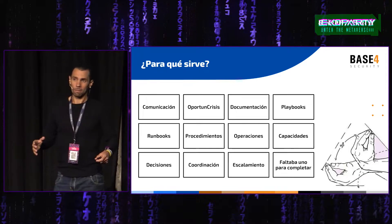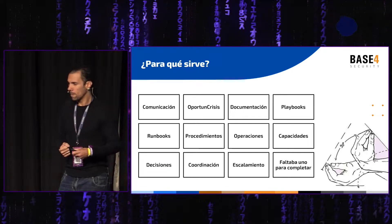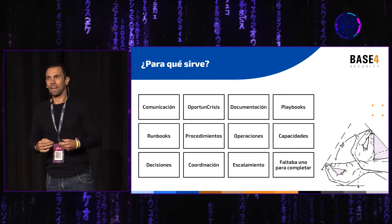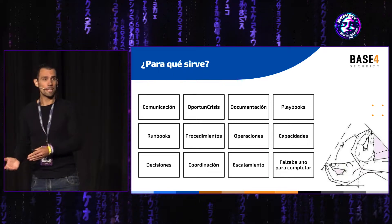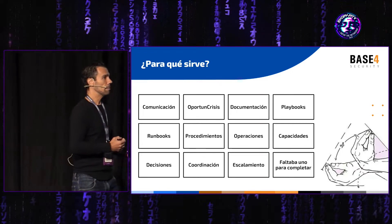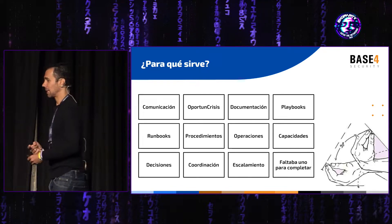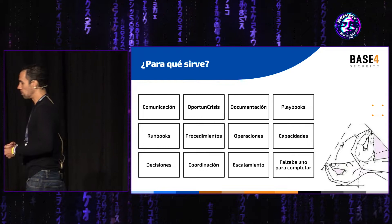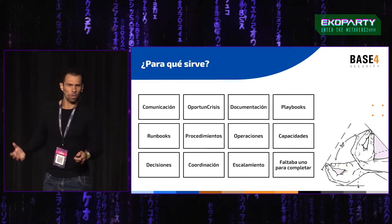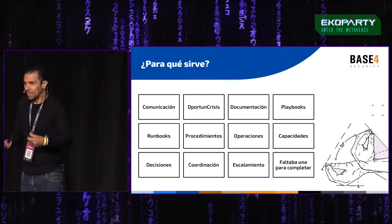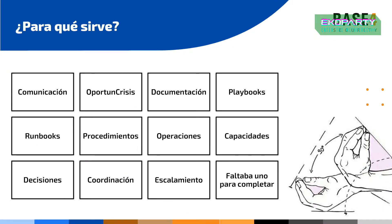¿Para qué sirve esto? Para un montón de cosas, tenemos que elegir para qué hacemos que sirva en nuestra organización. Principalmente para ver si todo lo que dijimos que íbamos a hacer en un incidente realmente sabemos si hay que hacerlo o no. Si los playbooks tienen sentido. Si podemos comunicarnos durante un incidente. Si nos tratamos con respeto en los equipos. Si conocemos los procesos de escalamiento. Si tenemos una buena forma de toma de decisiones. Si tomamos decisiones por consenso. Como cualquier deporte: sos tan bueno como aquello que practicaste en el momento que tuviste la oportunidad.